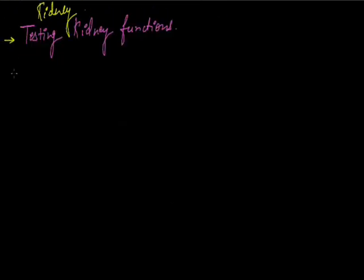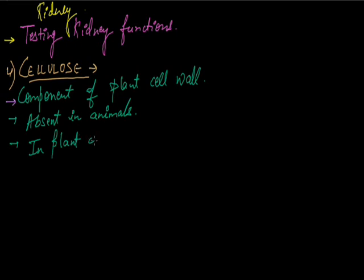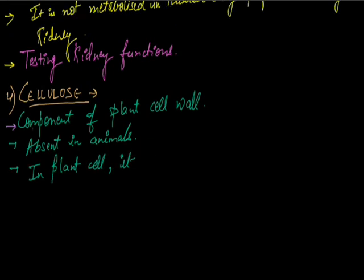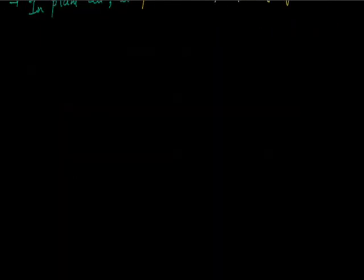Next is cellulose. Cellulose is the component of plant cell wall. It is absent in animals. In plant cells it provides shape and rigidity to the cell.